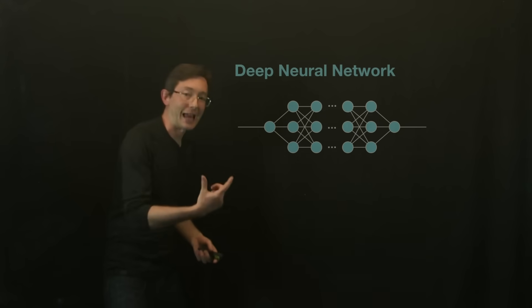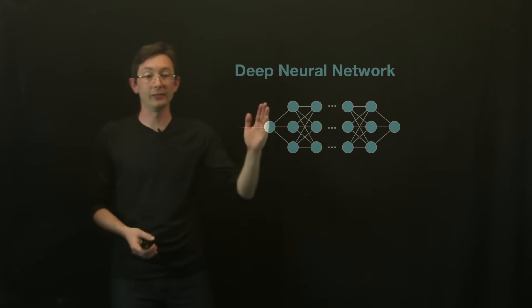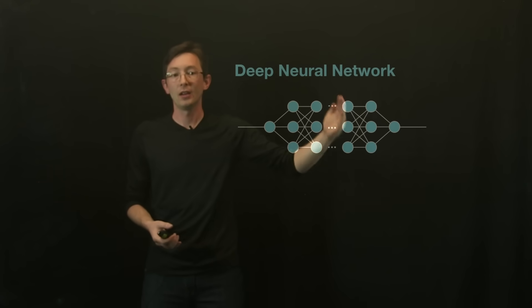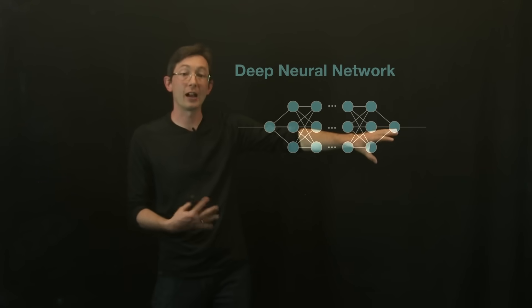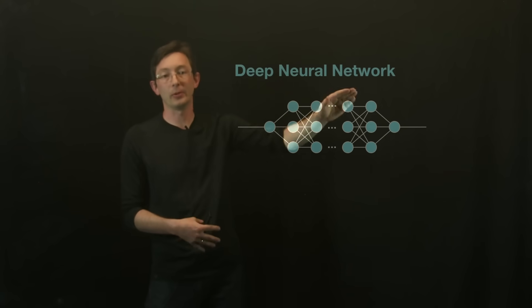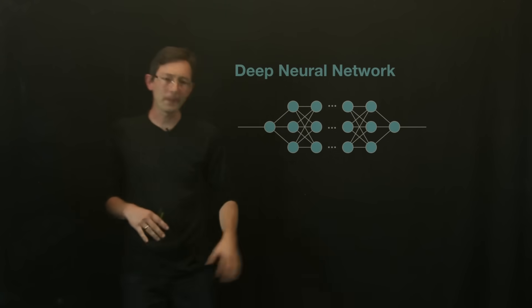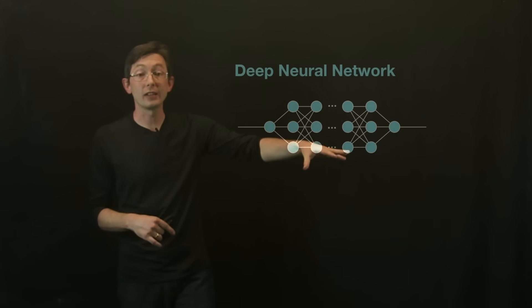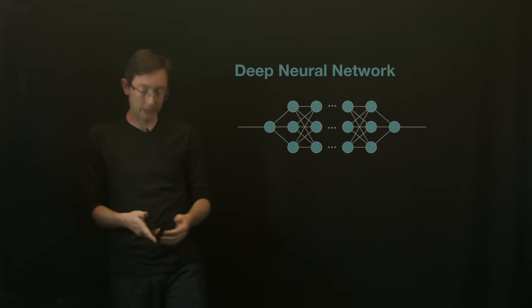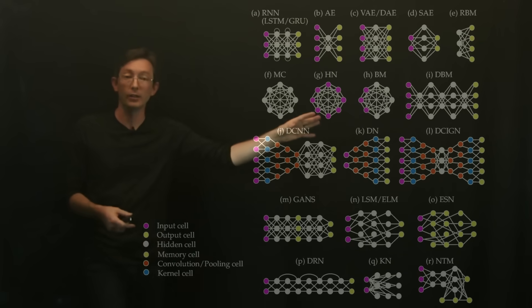If you keep stacking more and more of these layers, so each layer is doing some kind of sequential processing, if you start to add a lot of these, then you have what's known as a deep neural network. This is the basis of deep learning today. There are a ton of things you can do with these neural network architectures. I'm just going to show you a few here.